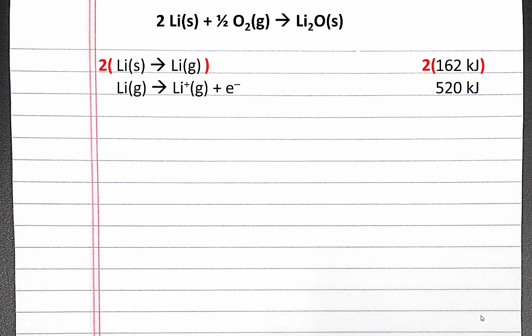Next, we're going to remove an electron from the gaseous lithium atom. This corresponds to the first ionization energy of lithium. We'll need to multiply this equation times 2 again, which means we also need to multiply the first ionization energy of lithium times 2.